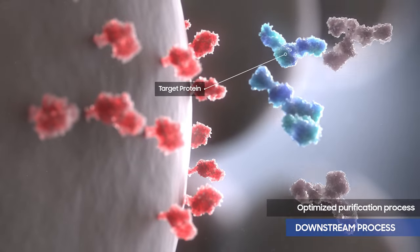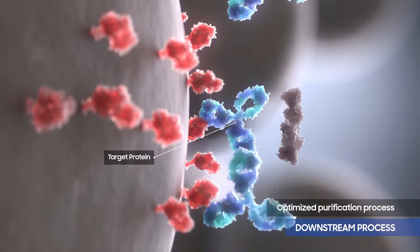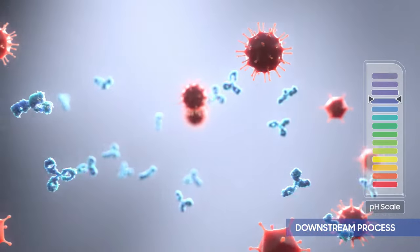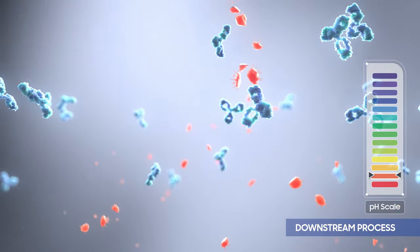Your target protein can be isolated through chromatography steps such as affinity and ion exchange resin in the downstream process. Impurities and viruses can be removed through chromatography and filter steps.